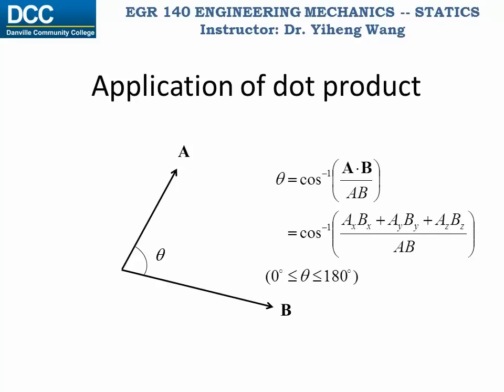Because of the algebraic and geometric definitions of dot product, dot product can now be used to find the angle theta between the two vectors A and B, following this formula.